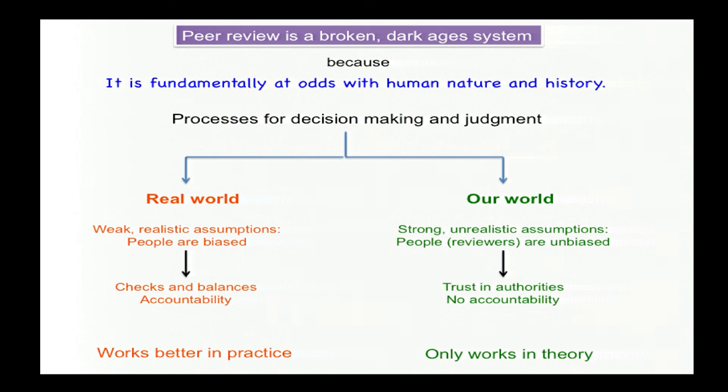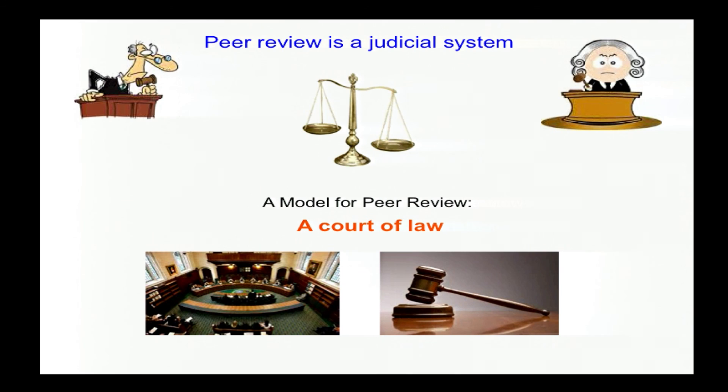Processes for decision-making and judgment in the real world are realistic. They know that decision-makers are biased, even with the best of intentions, and they compensate by adding checks and balances and accountability. And we, on the other hand, implicitly make the assumption that people, reviewers placed in power, are ubiquitously fair, and all we need is to trust them and have no accountability. And this is not only kind of ludicrous in general, but we are a community whose motto is trust no one. And when we see this, it should be no surprise that this system fails.